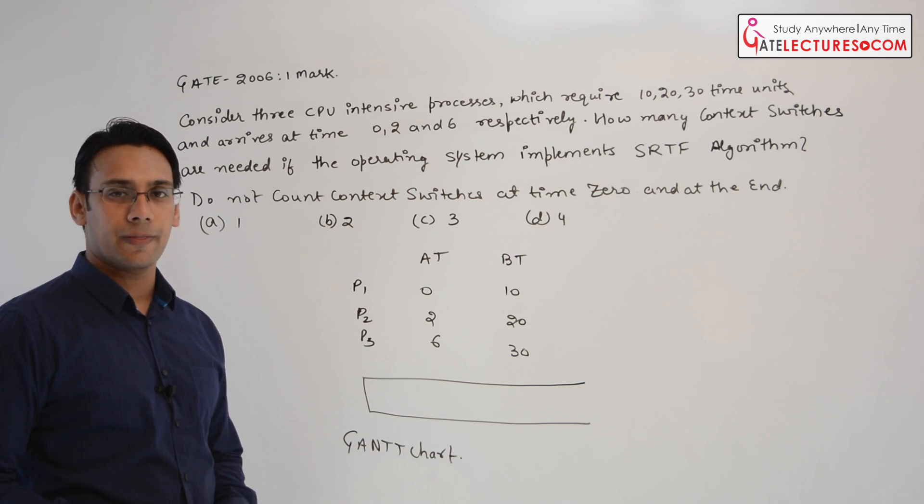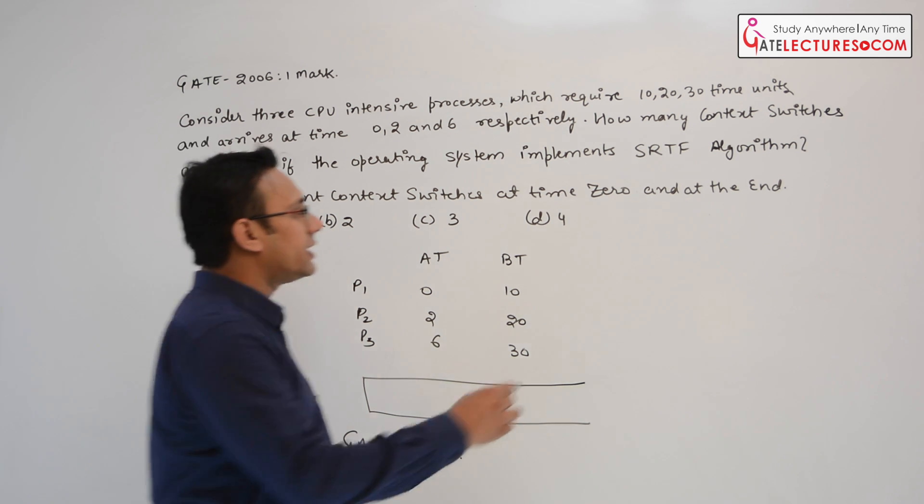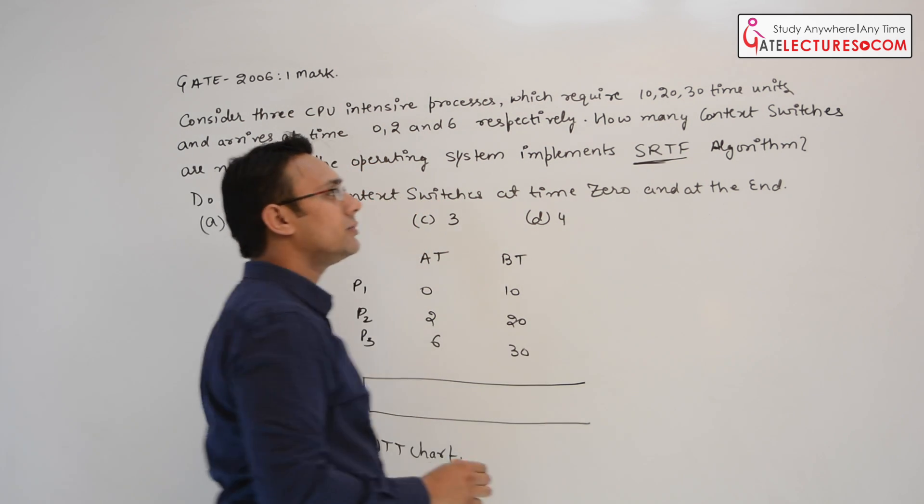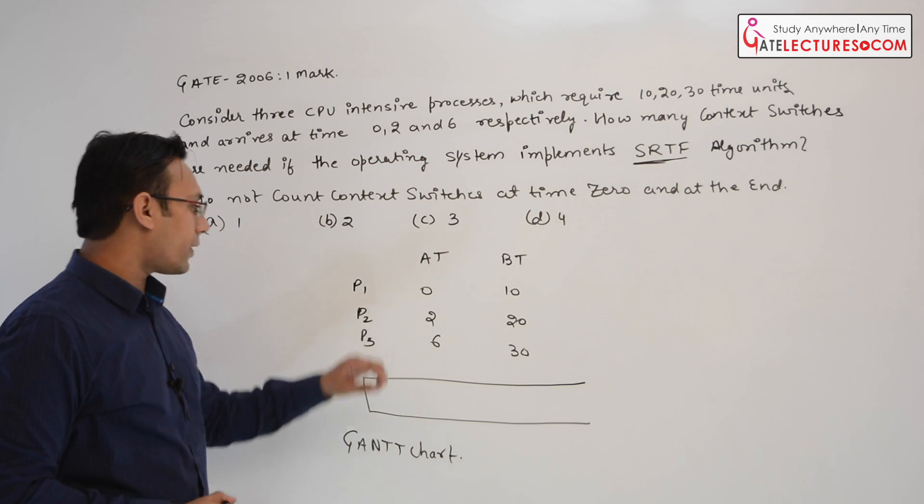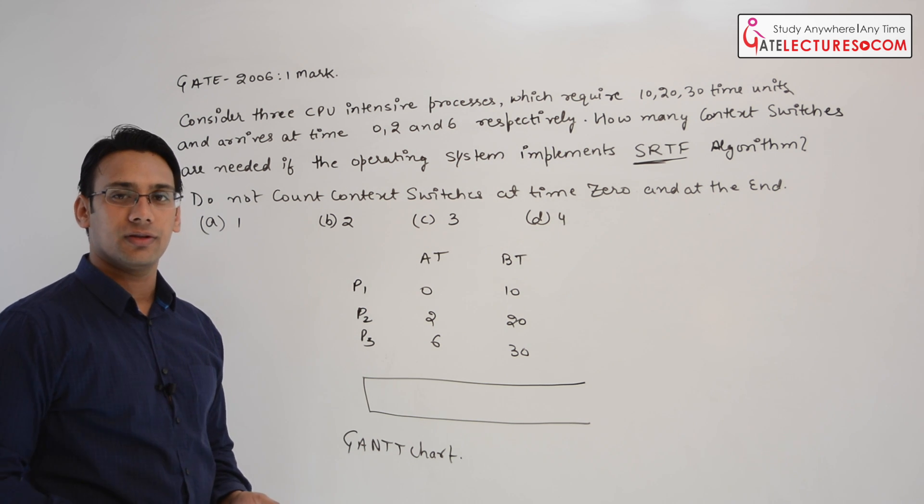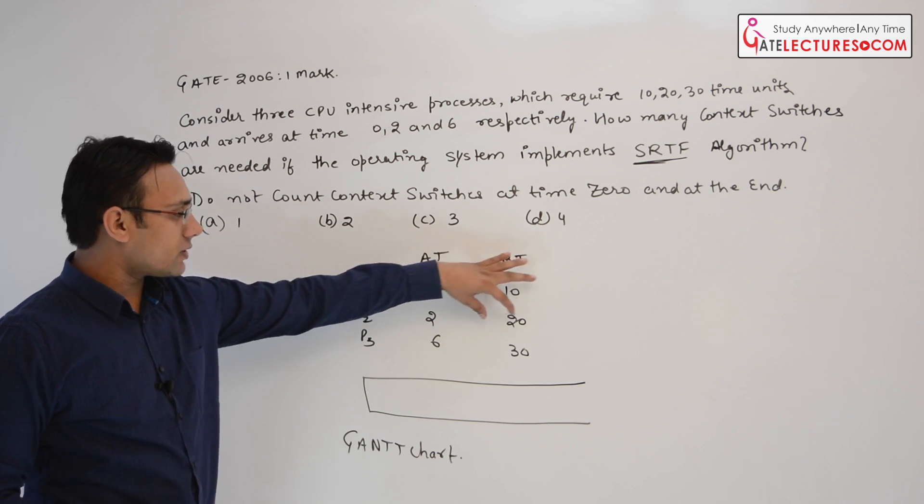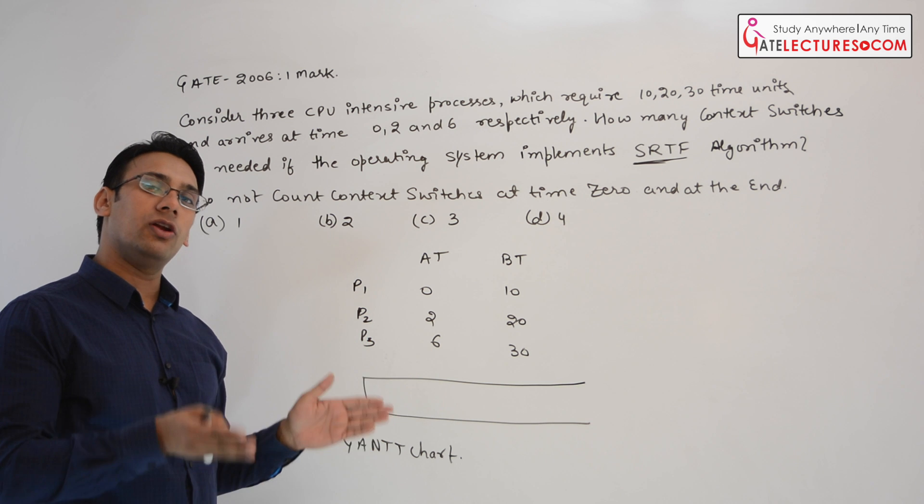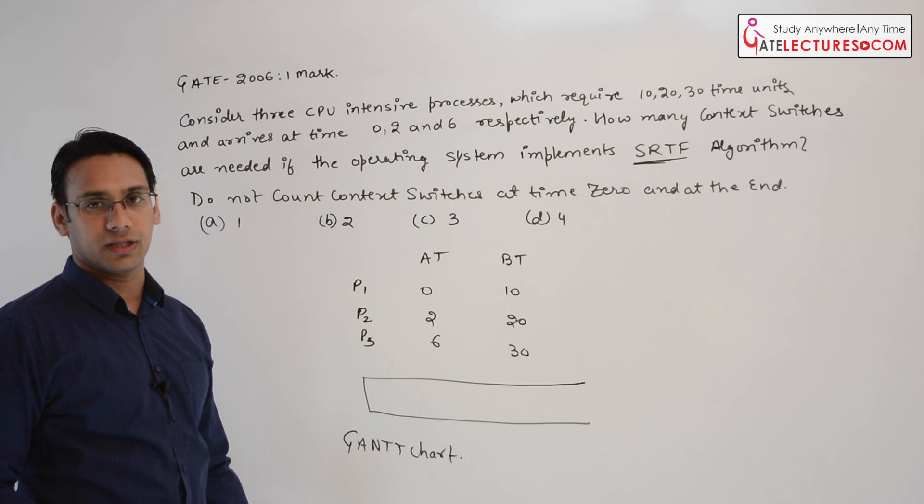Now, even if they are giving that it is the shortest remaining time first algorithm, if you start the process P1 first then this will always be the smallest process. After that, if you do the process P2 then process P2 will always be smaller than the process P3.